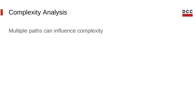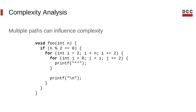One problem that arises in the context of empirical complexity analysis is the fact that multiple paths in a program can influence complexity. Look at this example here — we have a pair of nested loops inside a conditional, and if we tested this program only with odd inputs, we wouldn't get an accurate description of its cost, because it only runs its nested loops if the input is even. So if we only used odd inputs, we would think it has constant complexity, but this is not the case. We have to test many different inputs to get an accurate description of the program's cost.